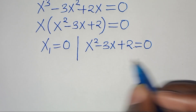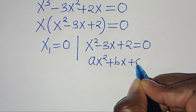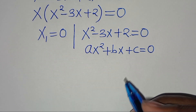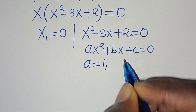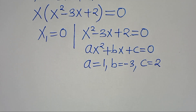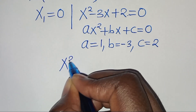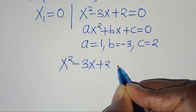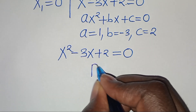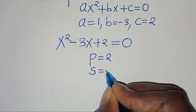Now, this is a quadratic equation of the form ax squared plus bx plus c, this is equal to 0. From this quadratic equation, we have that a is equal to 1, b is equal to minus 3, and c is equal to 2. Now, we can solve this quadratic equation by factorization method, whereby the product is equal to 2, and the sum is equal to minus 3.